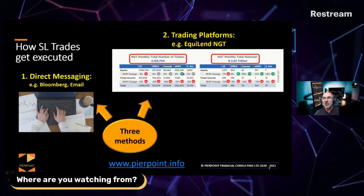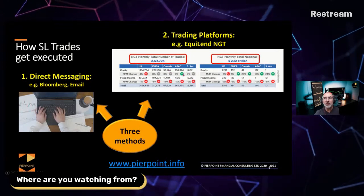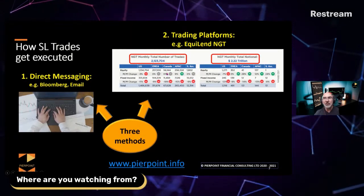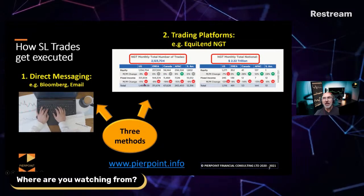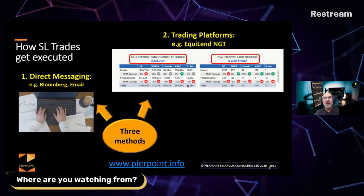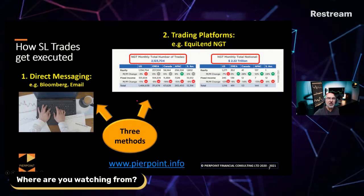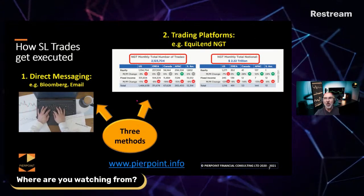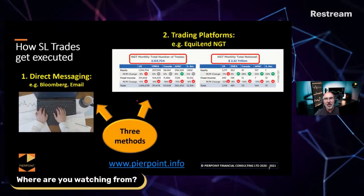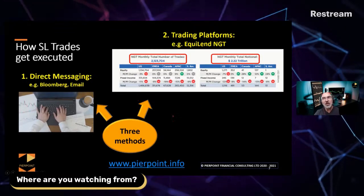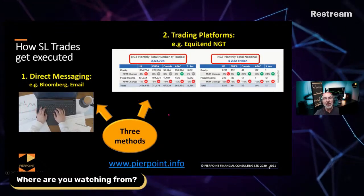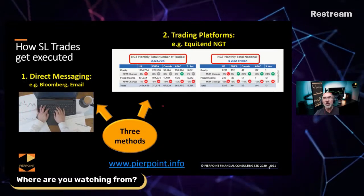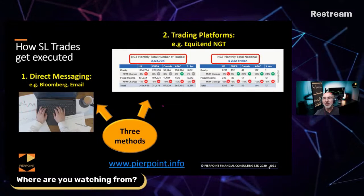In this case, we've seen more trading in Asia, flat in Europe and Canada, a bit of a drop in the US in equities, and fixed income was down just generally. But some interesting statistics: 2 million trades for the month, $2 trillion of value. As you can imagine, automation is fundamental to this — you can't really have people getting involved with 2 million individual trades to get them done.